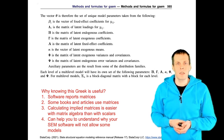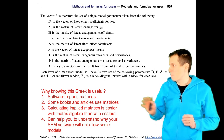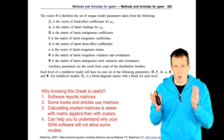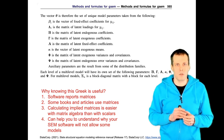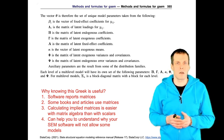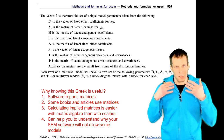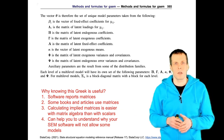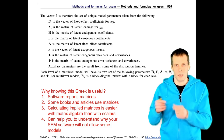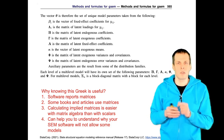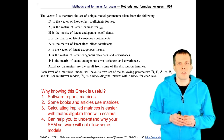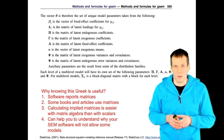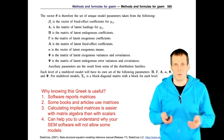So understanding this Greek notation is useful for a few reasons. First, your software will report matrices and call them by Greek names. Second, books and articles use matrices, and to understand them you need to understand the matrix notation. Third, calculating implied correlations is a lot easier with matrices than by looking at individual numbers. And finally, if you understand the matrix presentation of an SEM, you can understand what kinds of models are possible and not possible with your SEM software.